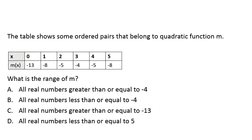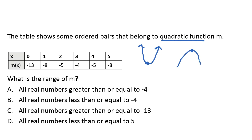Here's one more practice problem for you to try on your own. Go ahead and pause the video to see if you can work this one out, then press play to see the answer. The table shows some ordered pairs that belong to a quadratic function. So we're either going down to the vertex and turning back up, or going up to the vertex and turning back down — that's the shape of a quadratic, a parabola.